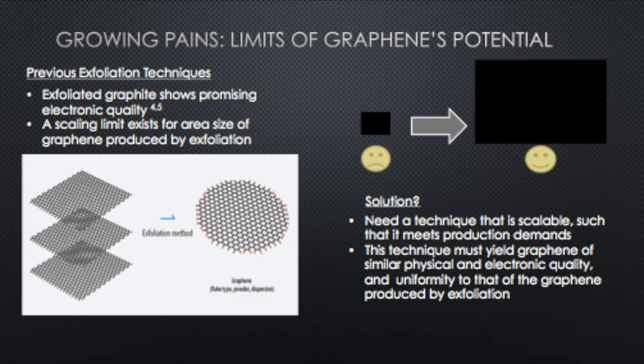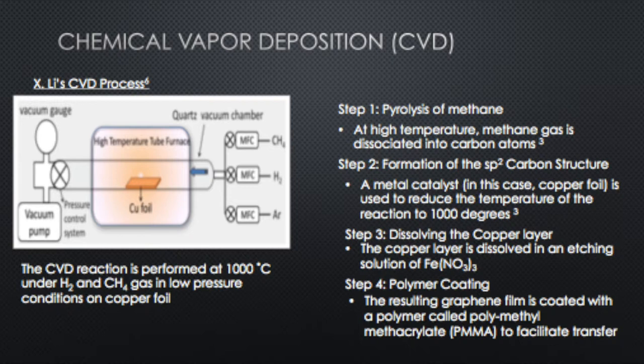We need a scalable technique that can produce larger area samples of graphene, requiring less time and manpower while meeting production demands. However, this new method needs to be tested for its physical and electronic quality, just as exfoliation produces graphene of great electronic quality. The method the Lee group came up with is chemical vapor deposition, or CVD. The CVD reaction is performed at 1000 degrees Celsius under hydrogen and methane gas in a low pressure environment on a copper foil catalyst.